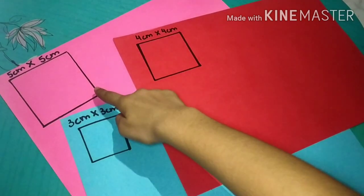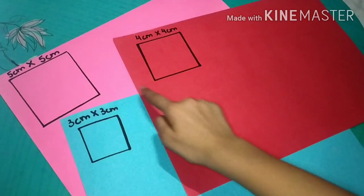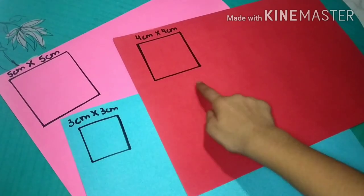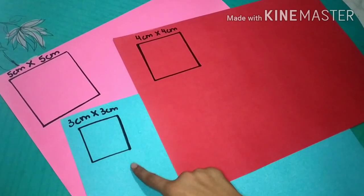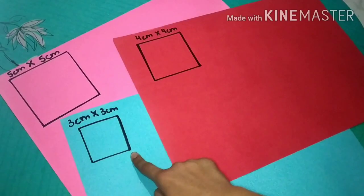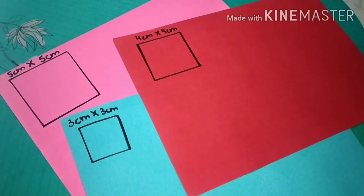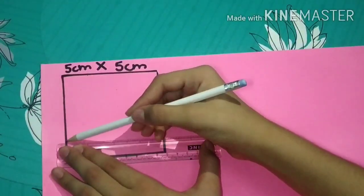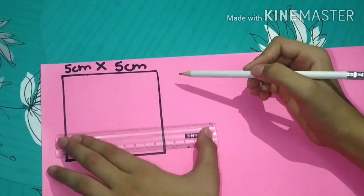We need to construct three squares across the sides of a right-angled triangle. The dimensions of each square are 5 centimeters, 4 centimeters, and 3 centimeters respectively. We need to divide the squares into small squares of 1 centimeter each.